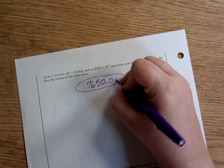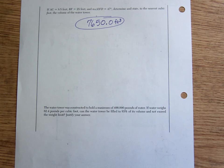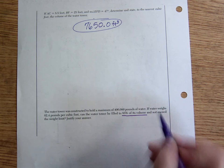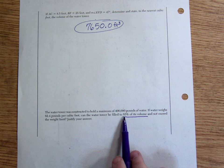Now, it says the water tower was constructed to hold a maximum of 400,000 pounds of water. If water weighs 62.4 pounds per cubic foot—per means for each—so 62.4 pounds for each cubic foot. Can the water tower be filled to 85% of its volume and not exceed the weight limit? There's a lot of ways we could approach this. Here is what I did. I looked at it and said, okay, 85% of its volume. I'm going to figure that out first.